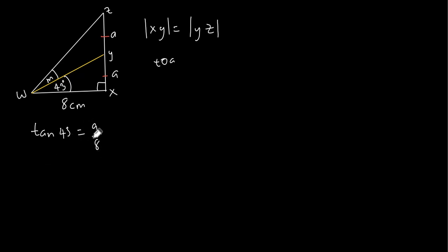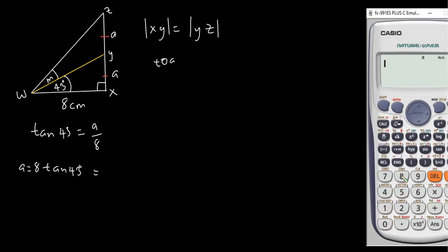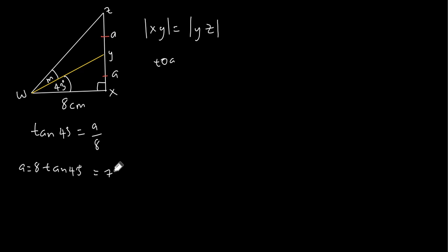Now let's find the value of a by multiplying by 8, so we have a is equal to 8 tan 43 degrees, and this is equal to 7.46 centimeters. So a is equal to 7.46 centimeters.